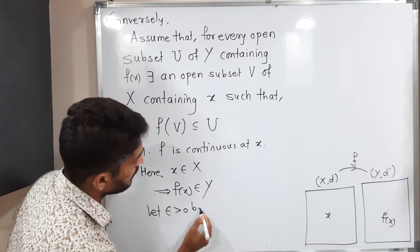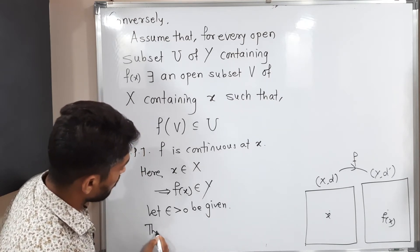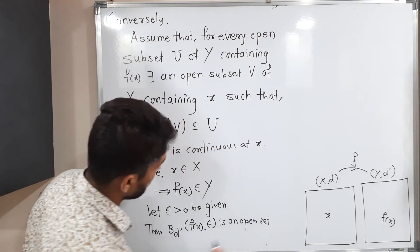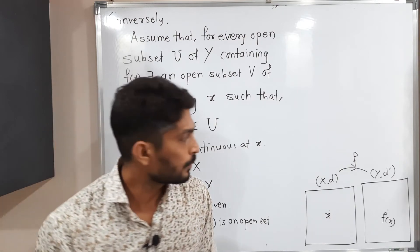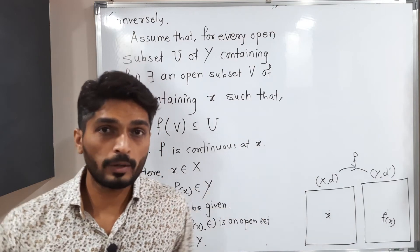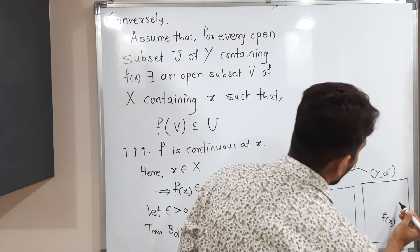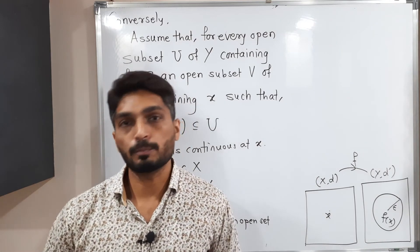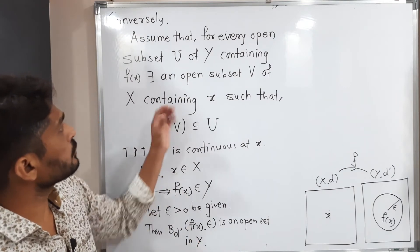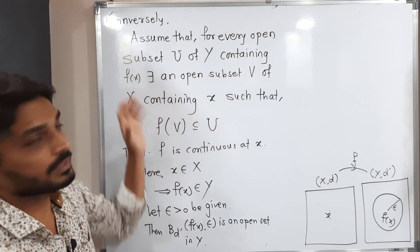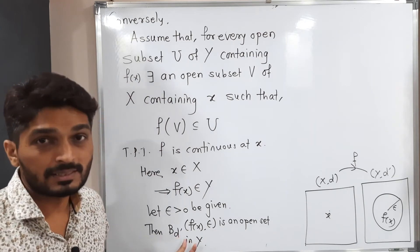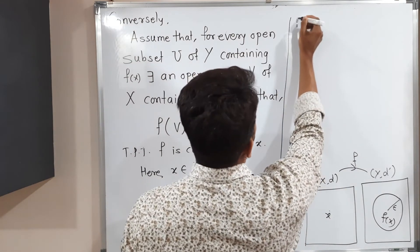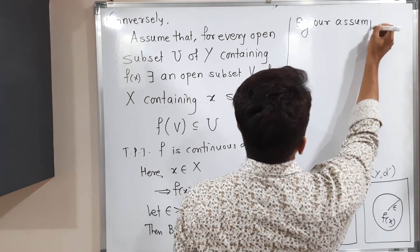Then the open ball B(d', f(x), epsilon) is an open set in Y. We proved earlier that every open ball is an open set. This open ball is an open set in Y containing f(x). So we can use our assumed condition: for every open subset U of Y containing f(x), the condition holds. Here, our U is B(d', f(x), epsilon).